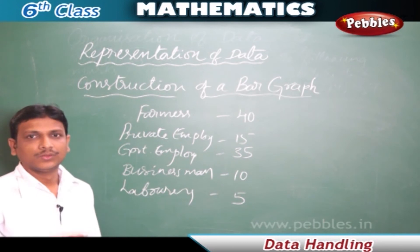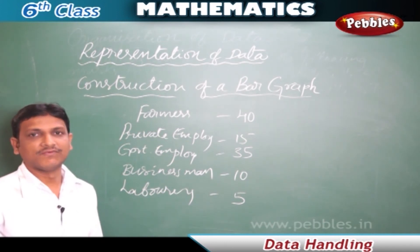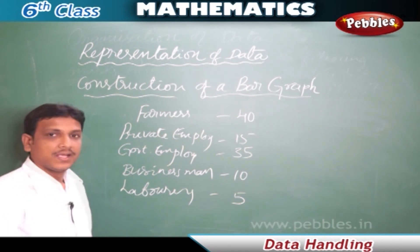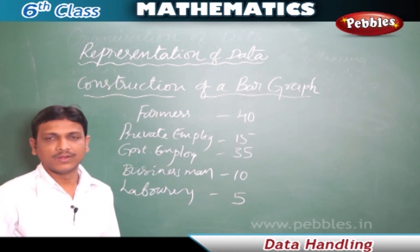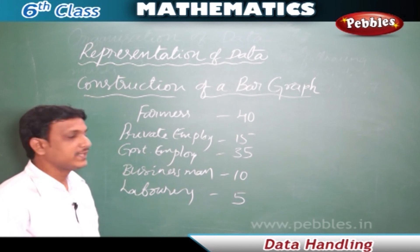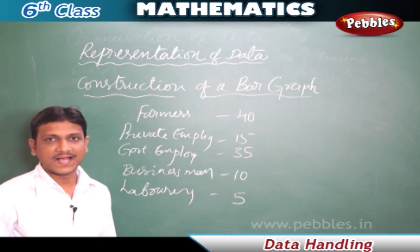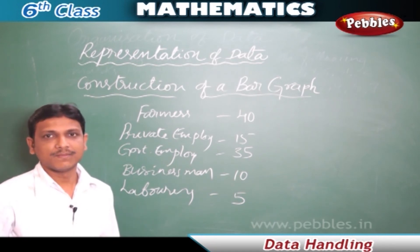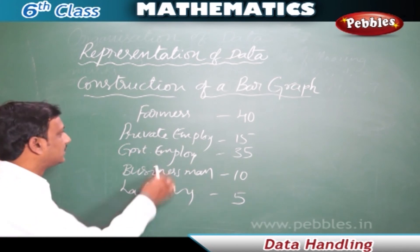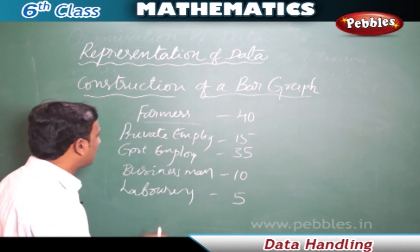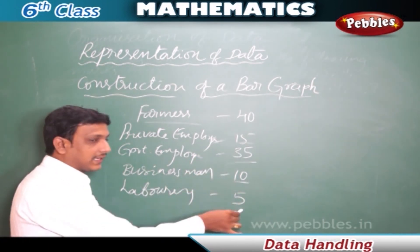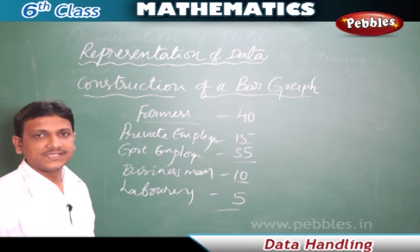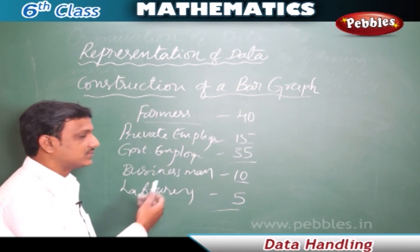Now we will learn the construction of a bar graph. We have data about people living in a colony: farmers - 40, private employees - 15, government employees - 35, businessmen - 10, and laborers - 5. We are going to represent this data using a vertical bar graph.